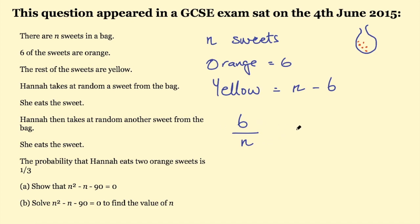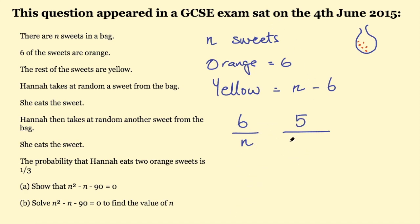Then for the second pick: she's already picked an orange sweet, so there are five orange sweets left in the bag. And the total number of sweets is no longer n — it's n minus one, because she already picked one out.